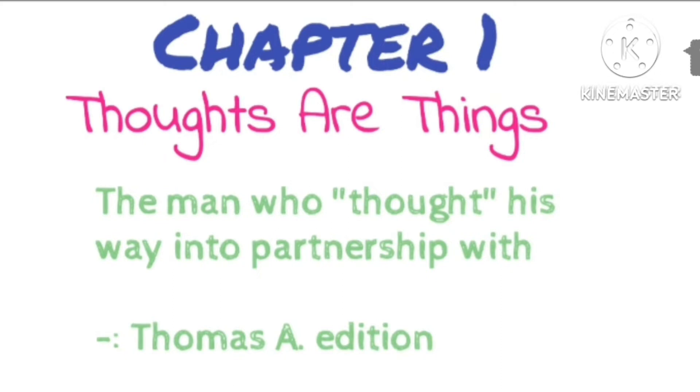In speaking of the first meeting between Barnes and Edison years later, Mr. Edison said: He stood there before me looking like an ordinary tramp, but there was something in the expression of his face which conveyed the impression that he was determined to get what he had come after. I had learned from years of experience with men that when a man really desires a thing so deeply that he is willing to stake his entire future on a single turn of the wheel in order to get it, he is sure to win. I gave him the opportunity he asked for because I saw he had made up his mind to stand by until he succeeded. Subsequent events proved that no mistake was made.